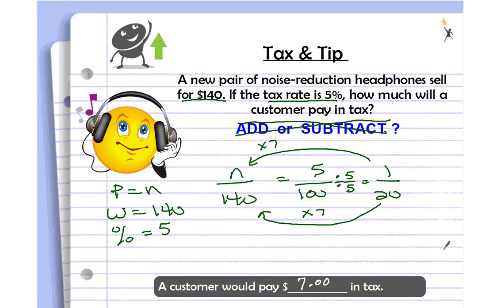Did you get seven dollars? That's how much the customer pays in tax — great job! If you got $147, you found the total cost including tax, but the question only asked for the tax amount, so you were almost there. If you didn't get $7, pause the video, look at how the proportion is solved, and find your mistake. If you still have questions, let your teacher know.